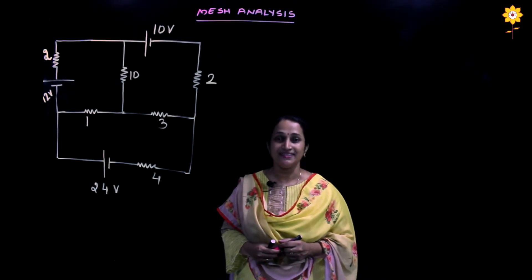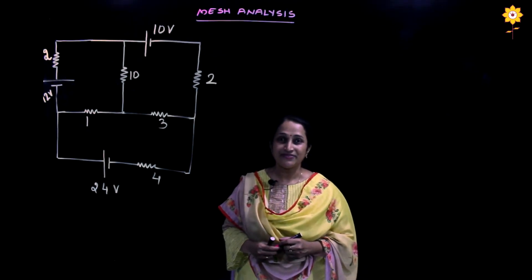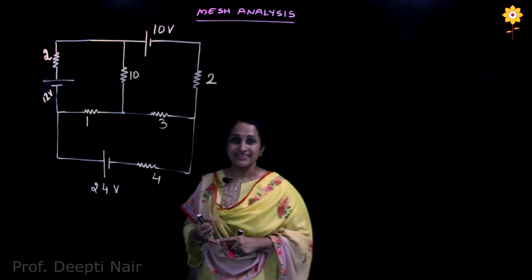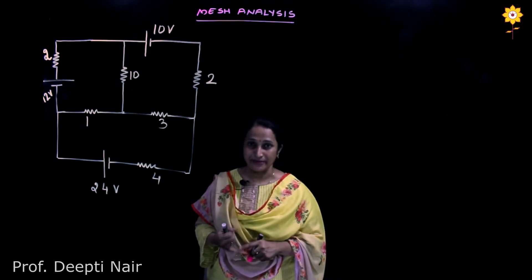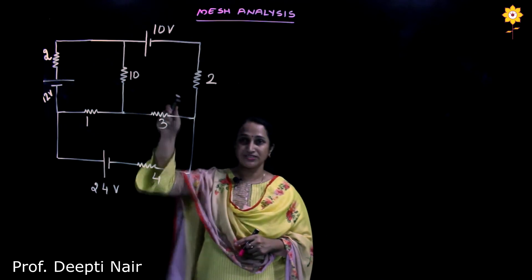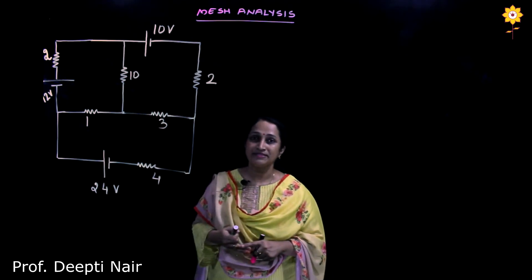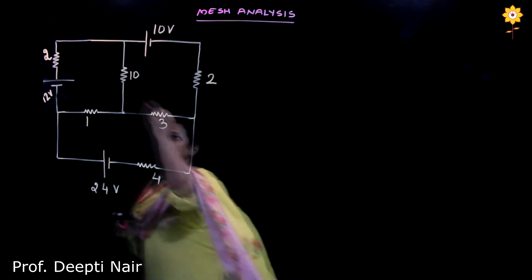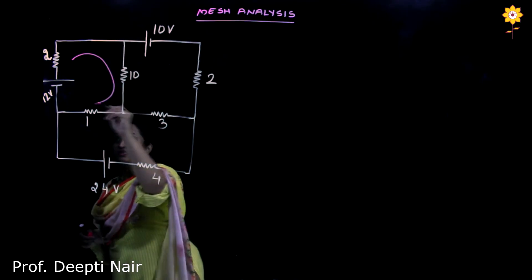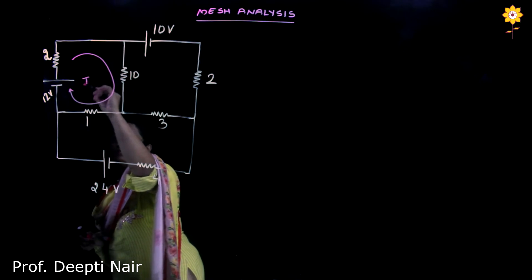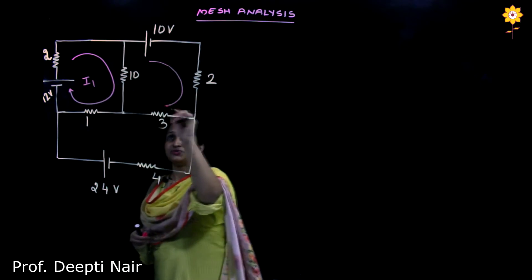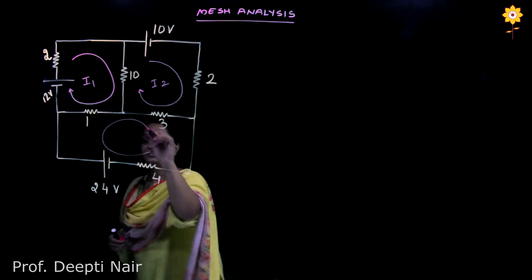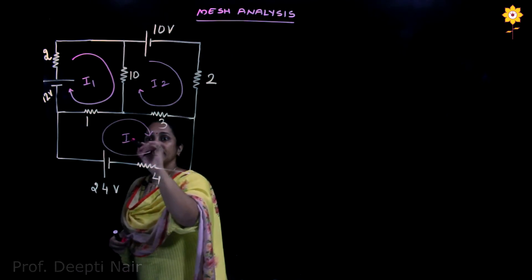Welcome to MES e-learning channel. In this video we will continue with mesh analysis. The first step is to identify the meshes — there are three meshes in this circuit. The second step is to mark the mesh currents in the clockwise direction. Mesh 1 current is I1, mesh 2 current is I2, and mesh 3 current is I3.